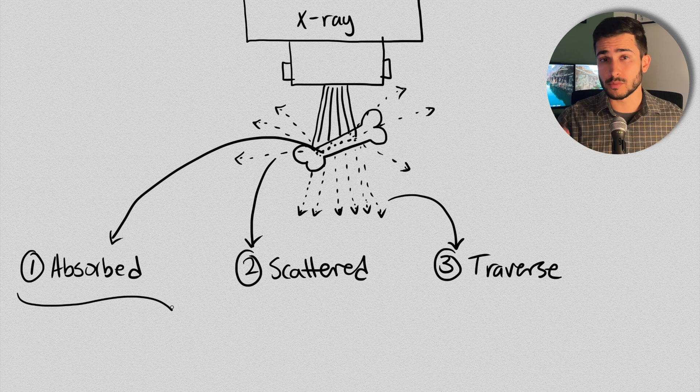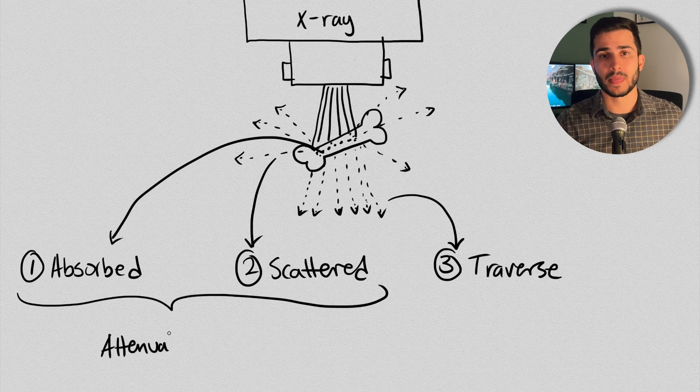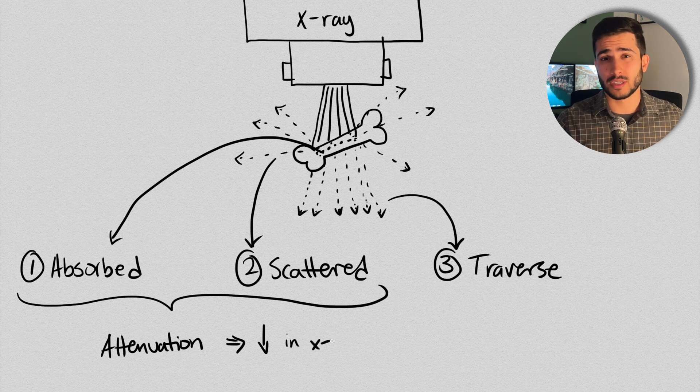Now, if the photon is absorbed or scattered, then we say that it's been attenuated. That, in a nutshell, is what X-ray attenuation means. The reduction of the intensity of an X-ray beam as it traverses material.